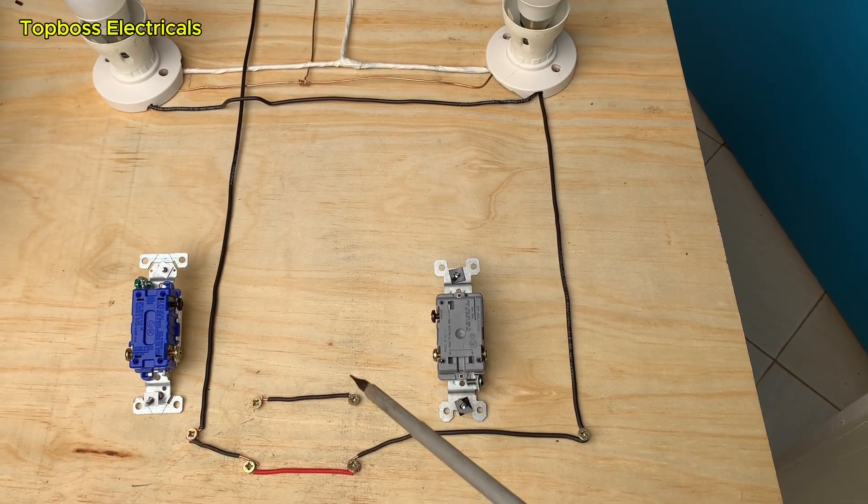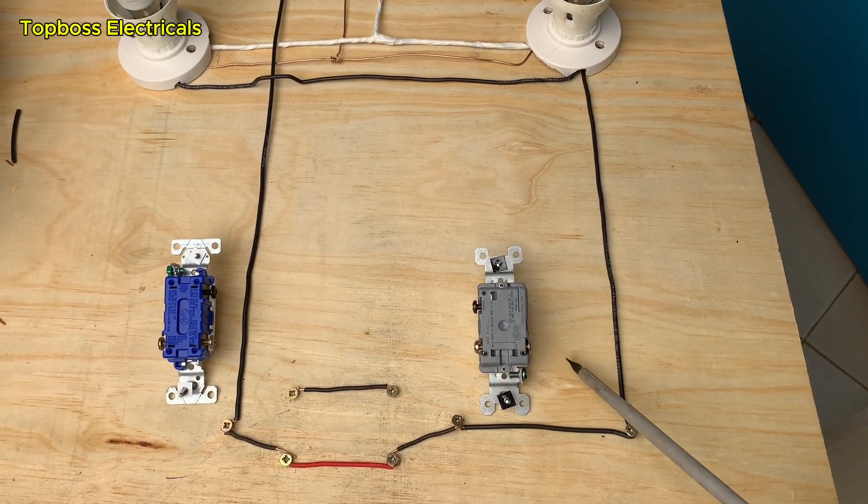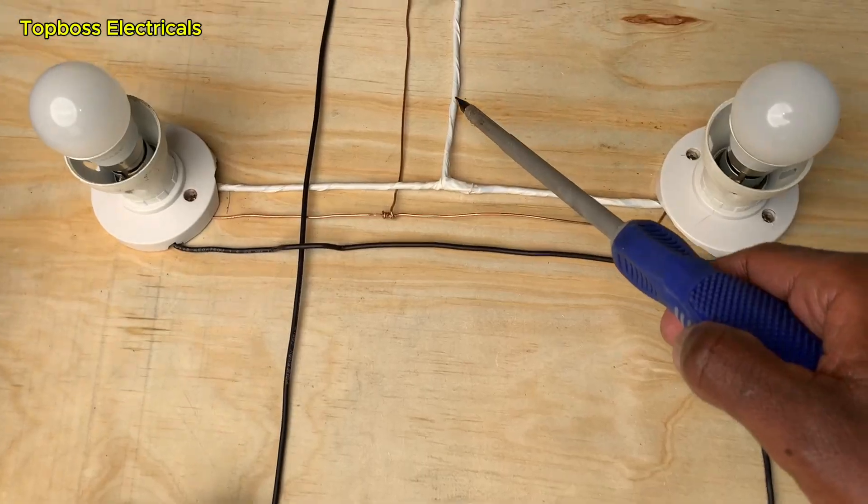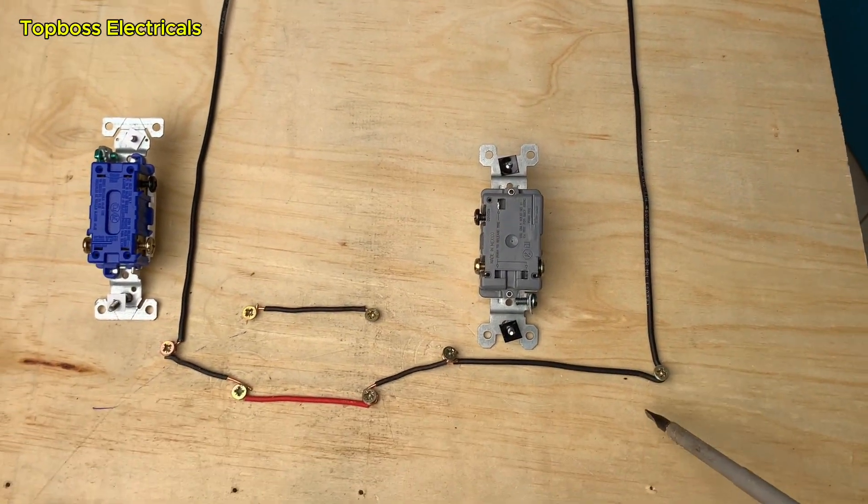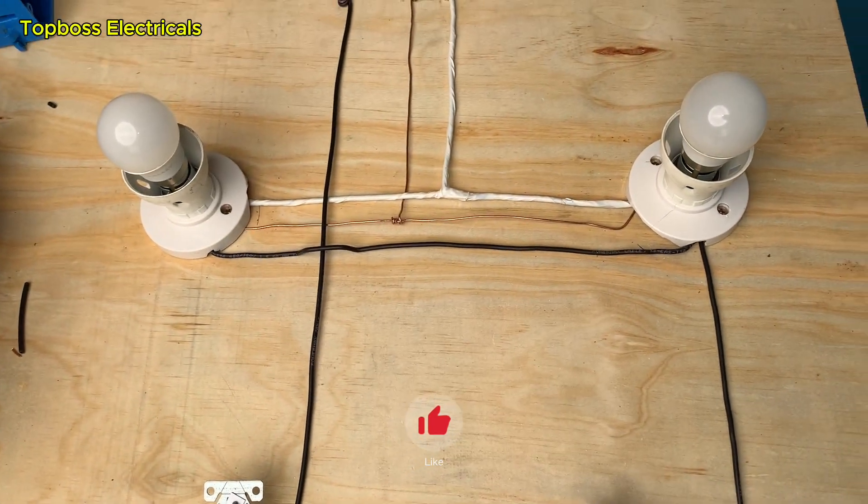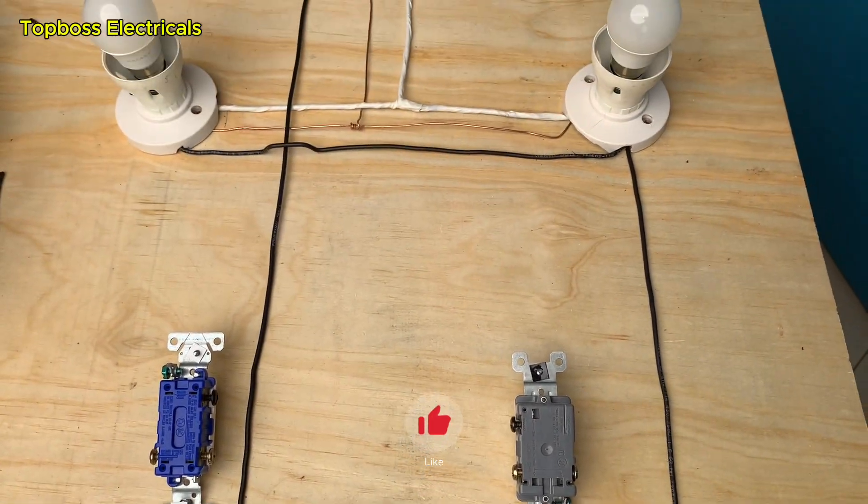Another important thing to note is that at the box where we will have these switches, we have a neutral connected inside. So this neutral or the white wire will come all the way to the switch and also to the other switch, and then back to that lighting fixture.